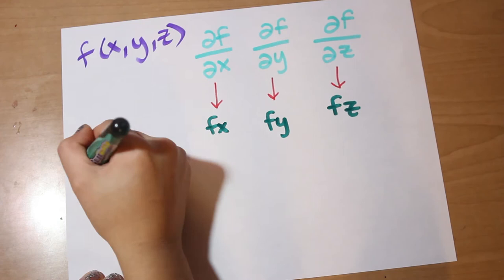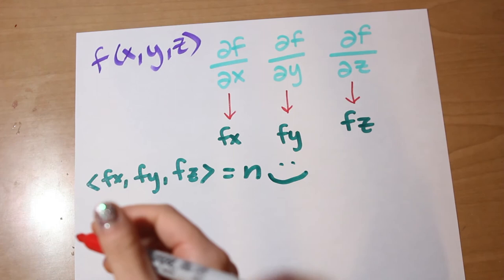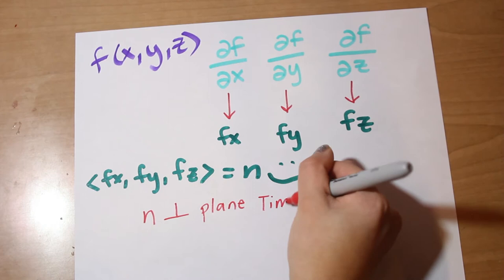Now, what do we know about this vector n? Right, it's orthogonal to the surface at this point. So in summary, it's orthogonal at the position (x minus a) plus (y minus b) plus (z minus c).